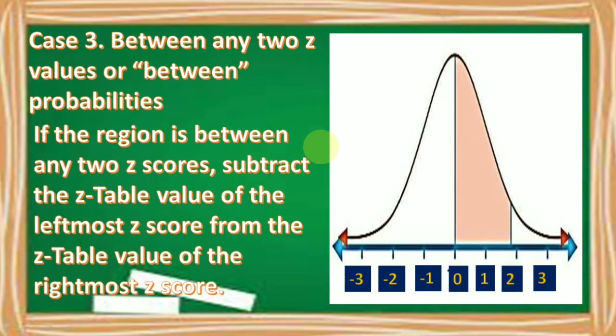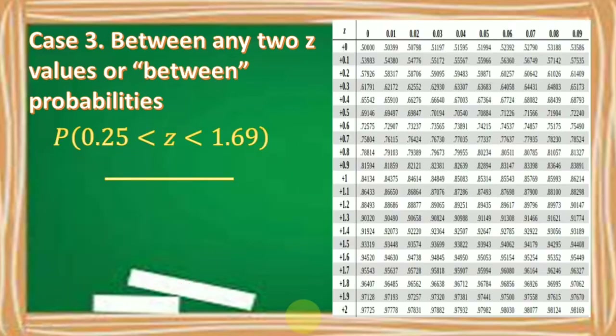Case number three: between any two Z-values, or between probabilities. If the region is between any two Z-scores, subtract the Z-table value of the leftmost Z-score from the Z-table value of the rightmost Z-score — meaning, subtract the lesser value from the greater value. For example, find the probability of Z greater than 0.25 but less than 1.69.